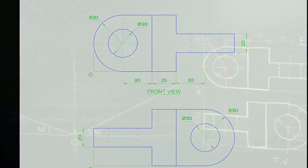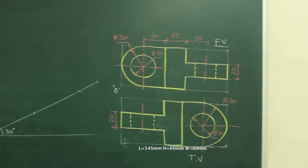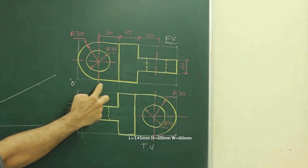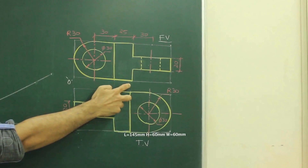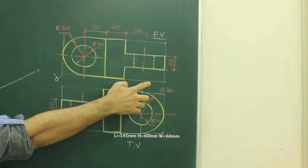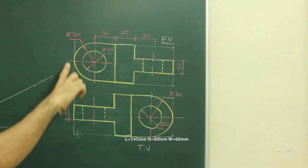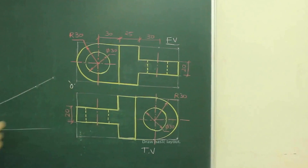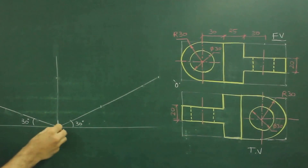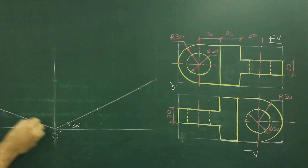In this sum, the length is 145. See this: first 30, then 30, then 25, then 30, then 30 — so the total length is 145. Height is 60 and width is 60. So first we will draw a layout. First we will mark 145, 60, 60.